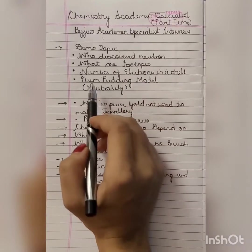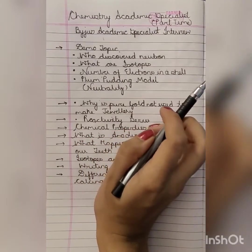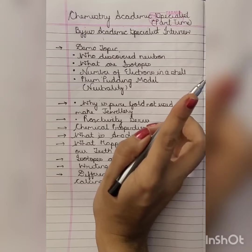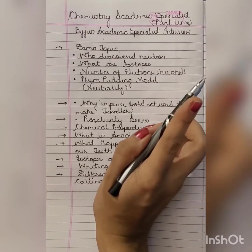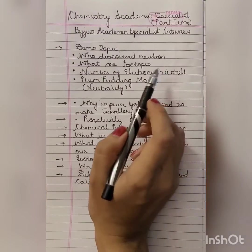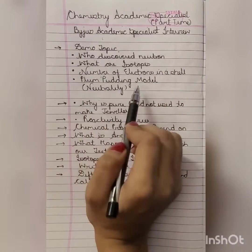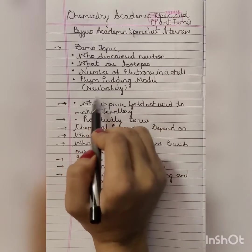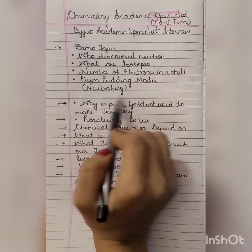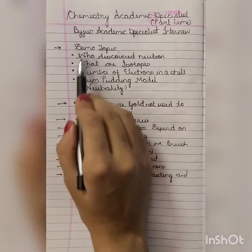Then he asked how many electrons can be in a shell. After that, since I had explained the plum pudding model, he asked why it is neutral. These questions were all from the demo topic.